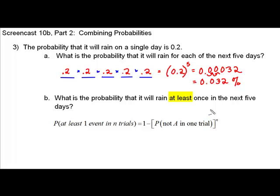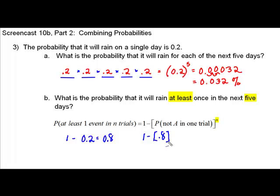The formula is to take one and subtract from it the probability that it will not occur in one trial, raised to the power corresponding to the number of events we're considering — in our case, five. We bring the one down as part of our formula. The probability that it will not rain: if the probability it will rain is 2 tenths, subtracting from one gives us 8 tenths. Remember, the probability that an event will occur and will not occur must add up to one. We put 8 tenths in our brackets and raise it to the fifth power.